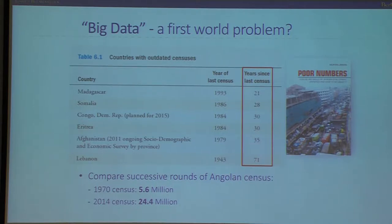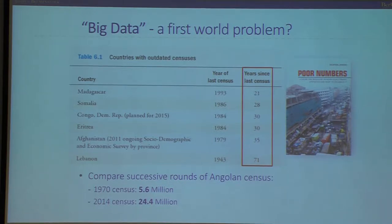This table illustrates the point. In Afghanistan, where one of my projects is being conducted, it's been 35 years since there's been a nationally representative survey. And if you look at the bottom, you can see just how much a country changes over 40 years — in Angola, the population swelled, there was a civil war, mass migration, forced dislocation. These poor data points play into not just how social scientists do research, but how important policy decisions are made.